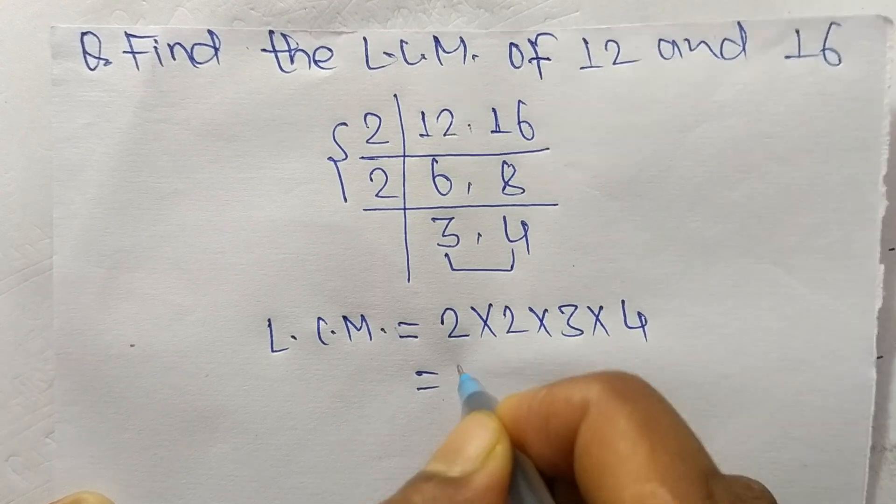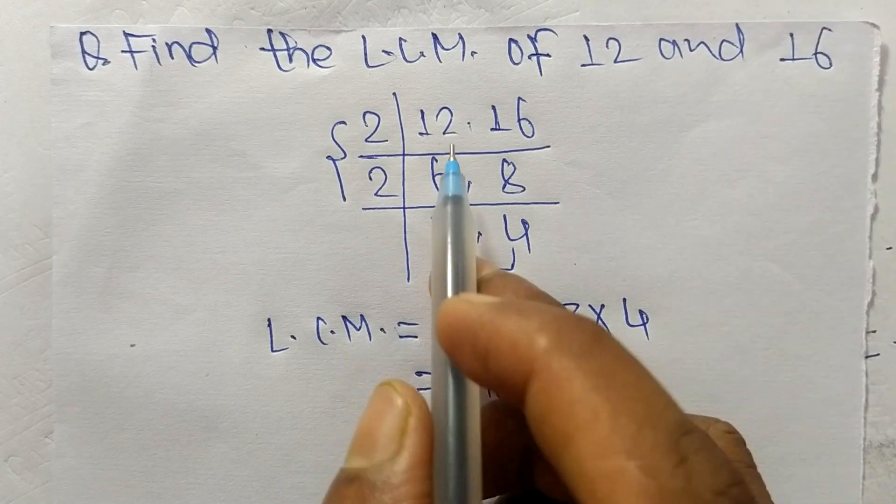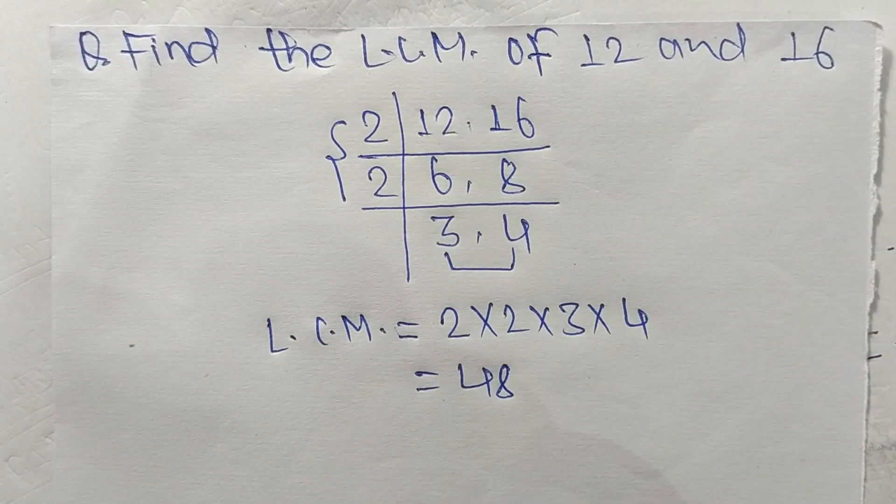12 times 4 means 48. So 48 is the LCM of 12 and 16.